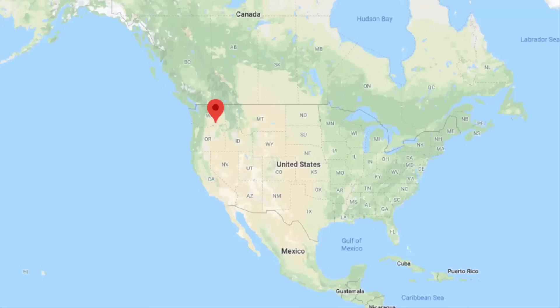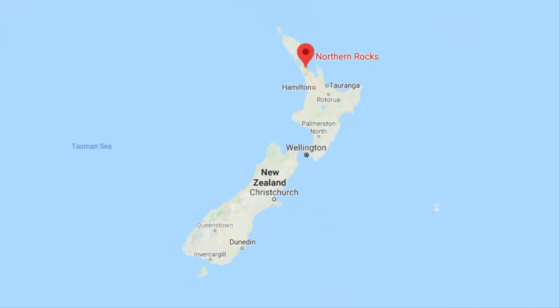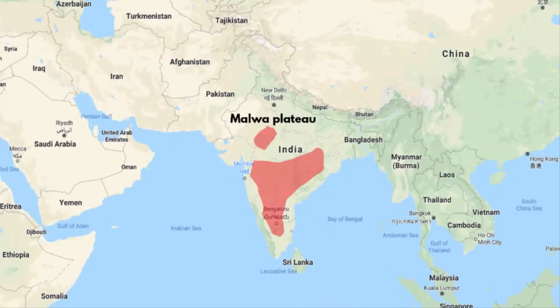Some examples of volcanic plateaus are the Columbia Plateaus in the northwestern United States, the northern islands of New Zealand, and in India, the Malwa Plateau and Deccan Plateau, which are of volcanic origin.